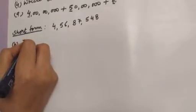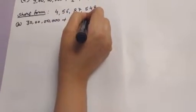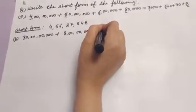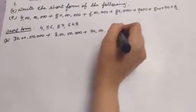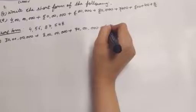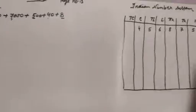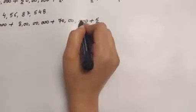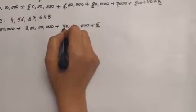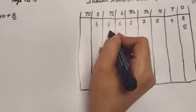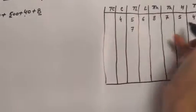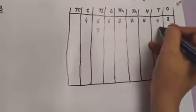See the next one. Five in ones column. Now — ones, tens, hundred, thousand, ten thousand, lakh, ten lakh — seven in ten lakh column. What about the remaining places? We will write zero, as no information is given for those places.